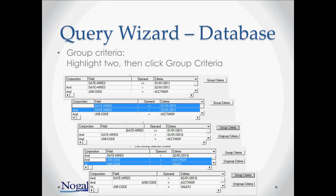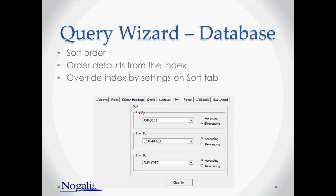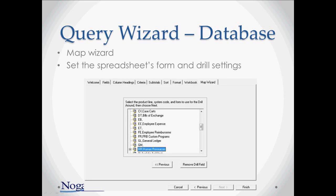The subtotal tab is used to put in breaks. Here the spreadsheet will break by job code. At the end of each break, the add-ins will provide the sum of the column salary by weekly rate that we've selected. Sort order is typically dictated by the index you choose, but you can change the sort order — keep in mind that could result in some performance loss as well. The spreadsheet fields can optionally be set up to be used with Lawson drills. You can select which screen you want to use as drills. If you set up drills, you must make sure that the add-ins output has the required keys necessary to do the drills. For example, on HR11, you want to make sure your output has at least company and employee, since those are the key fields for HR11.